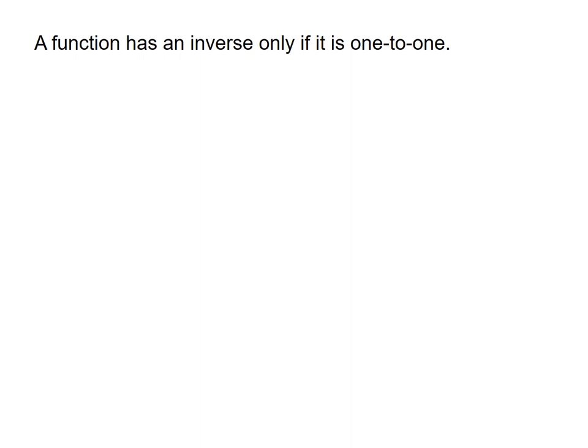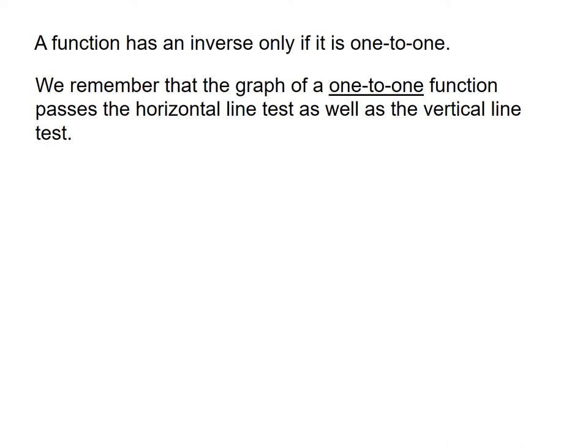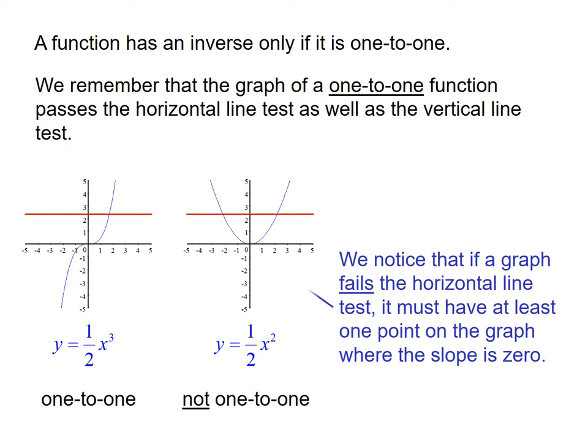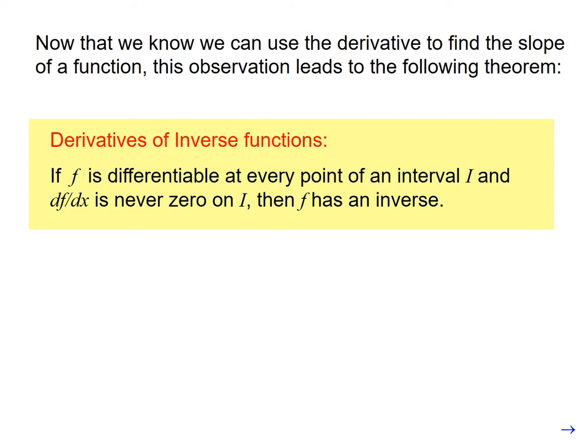We know that a function has an inverse only if it is one-to-one. We know that if a function is one-to-one, it passes the horizontal line test. So 1 half x cubed is one-to-one. 1 half x squared is not one-to-one. And what you notice is if a function is not one-to-one, it fails the horizontal line test. Somewhere there, it has to turn around, meaning somewhere the slope has to be 0. So we have this theorem that if a function is differentiable at every point on an interval, and if the derivative is never 0, then it must have an inverse.